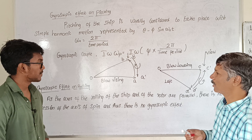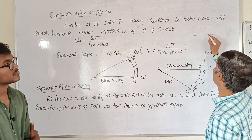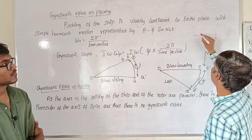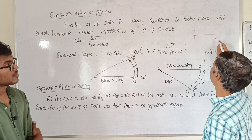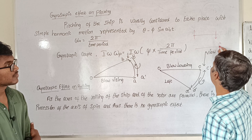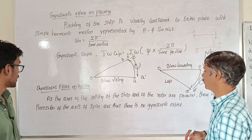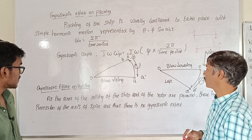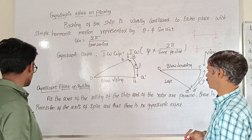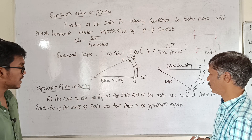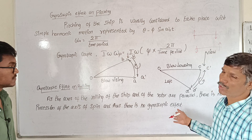This is the pitching motion. Next, the gyroscope will be rolling. As the axis of rolling of the ship and of the rotor are parallel, there is no precession of the axis of spin and thus there is no gyroscopic effect.